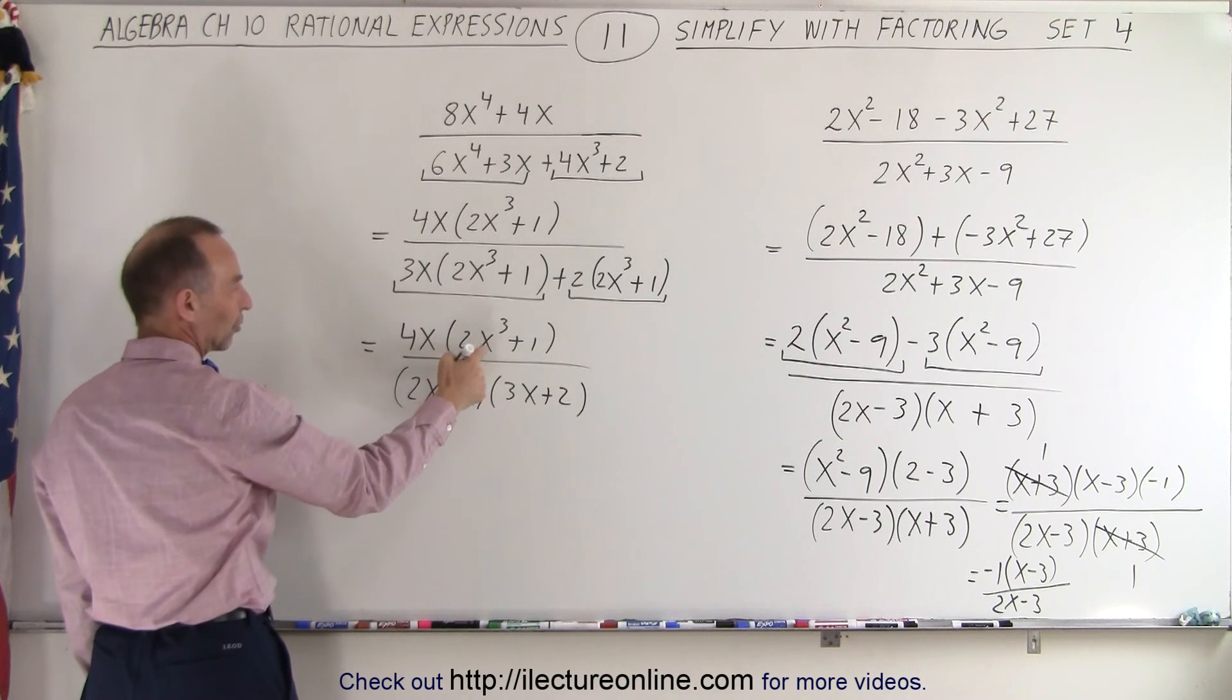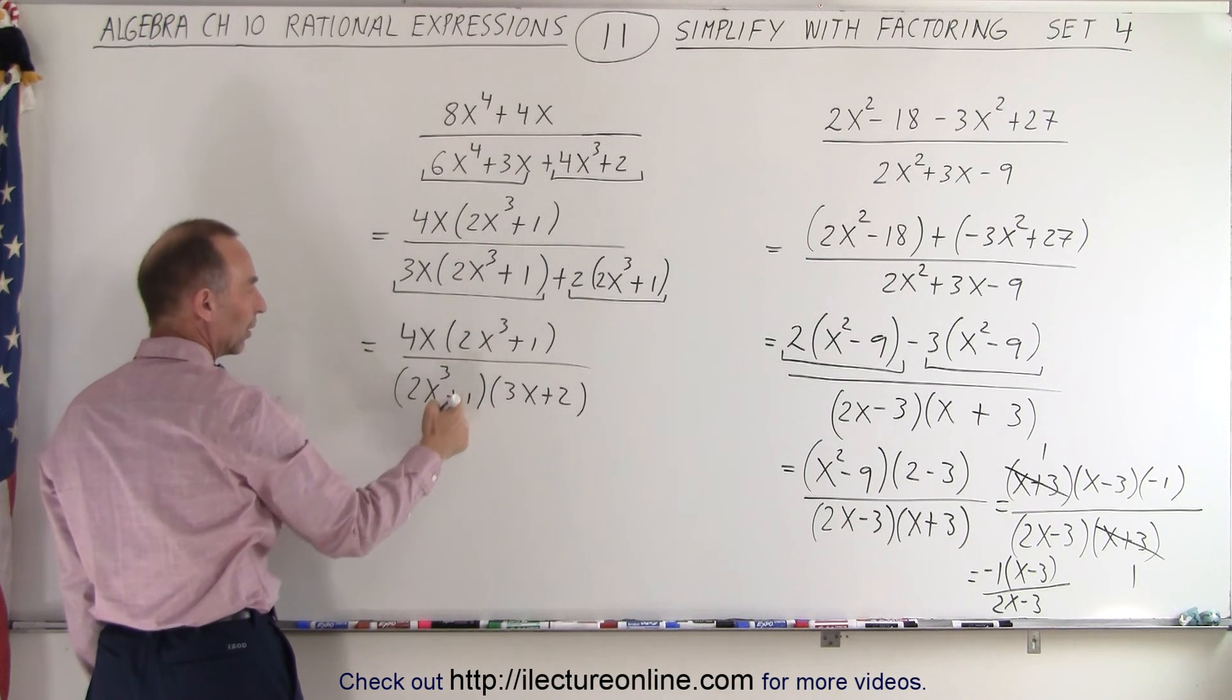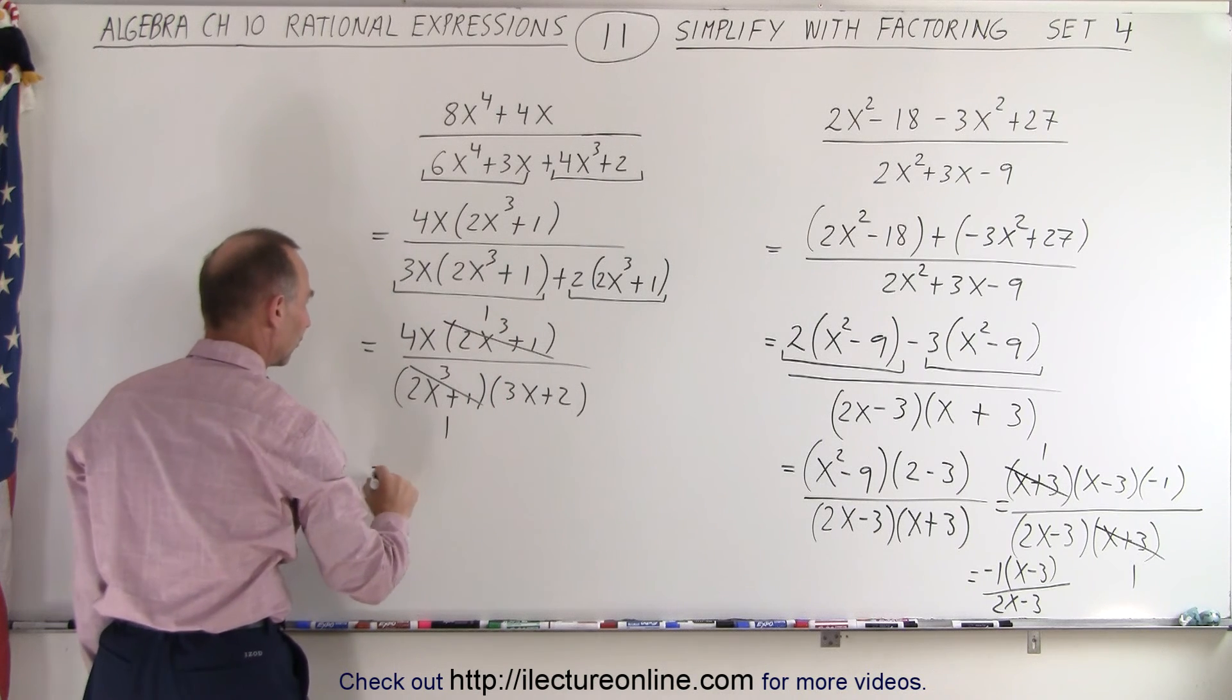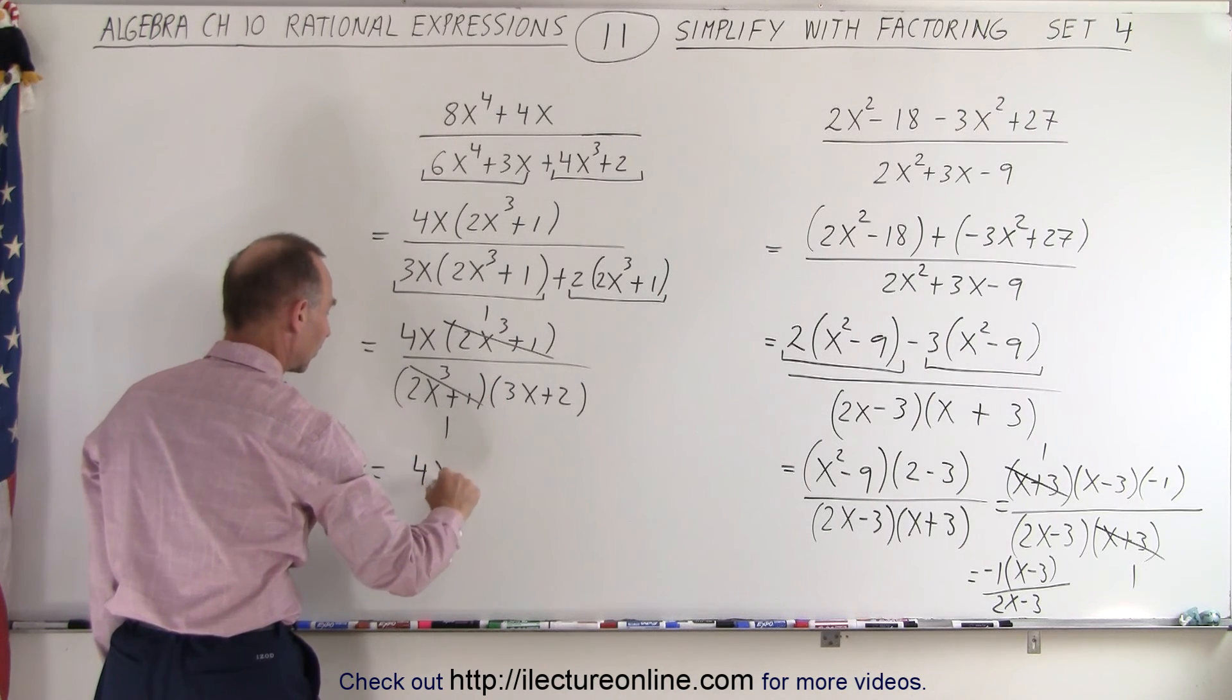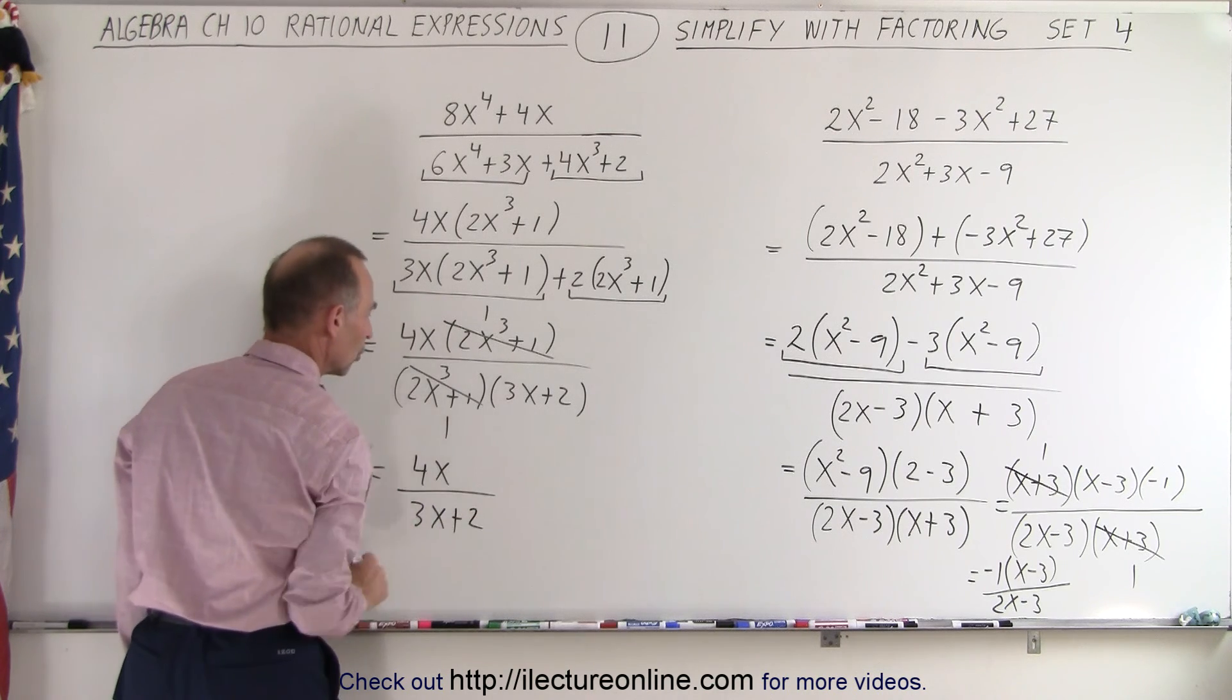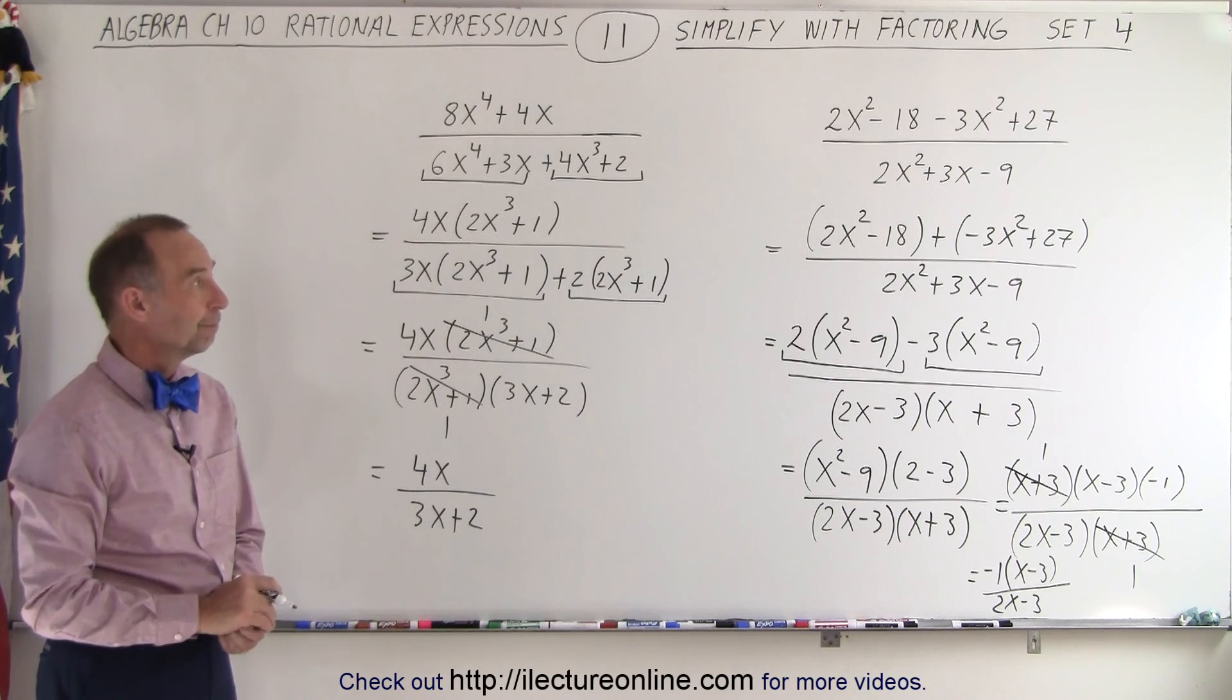And then realize that the 2x cubed plus 1 is common in the numerator and the denominator, so that cancels out. And then we're left with, in the numerator, a 4x, and in the denominator, a 3x plus 2. And that would be the simplified form of that one.